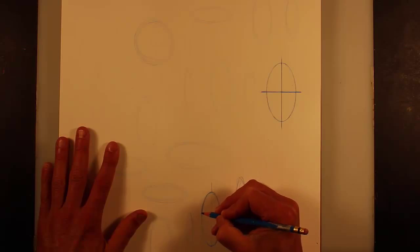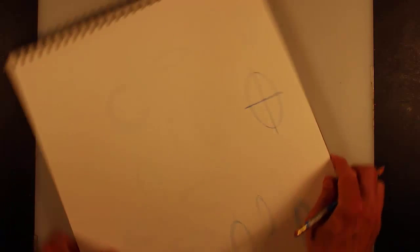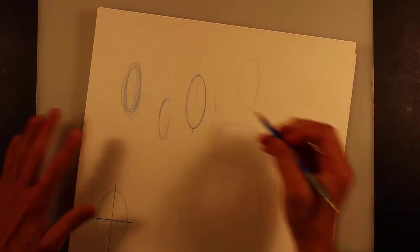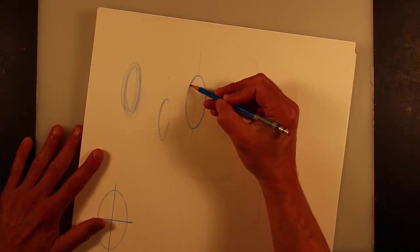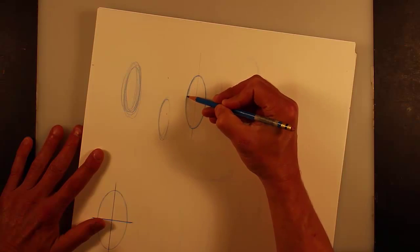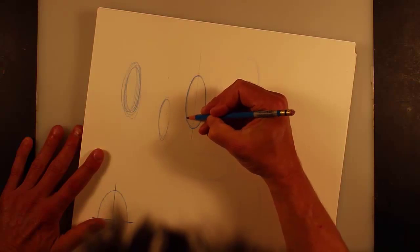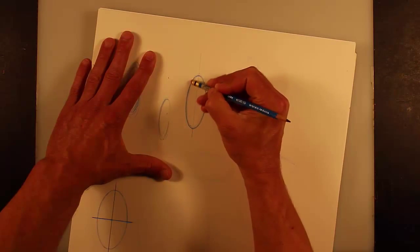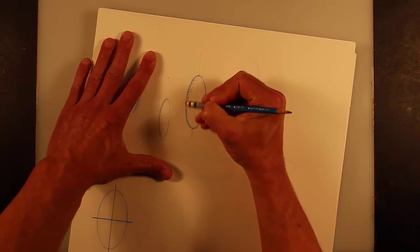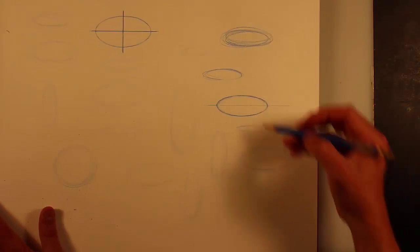And then once you feel like you've got it, then you can seal the deal more and commit to it. And when you commit, you don't want to lose what you've worked so hard to. You really want to keep that contiguous line going. But that's a fairly okay ellipse.